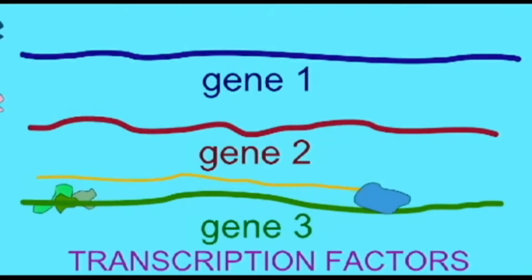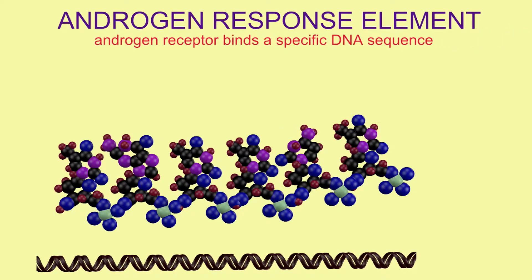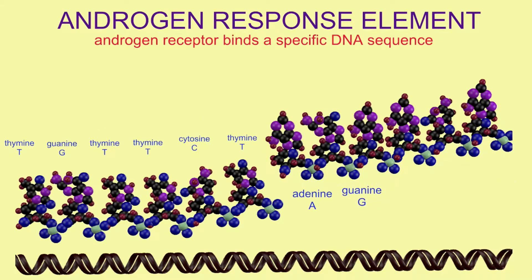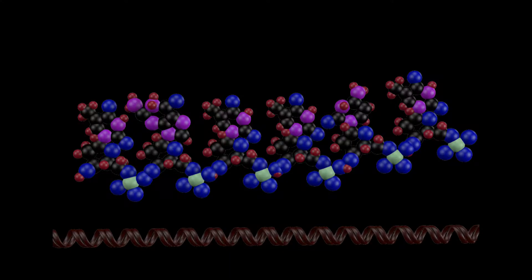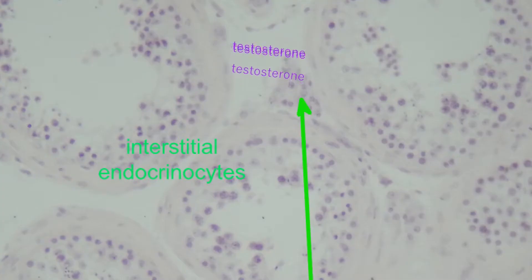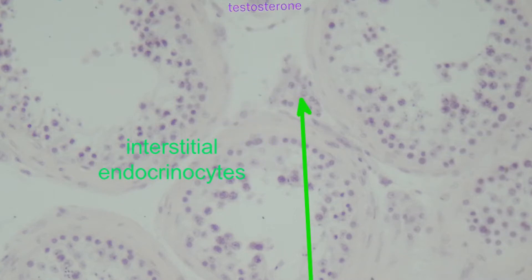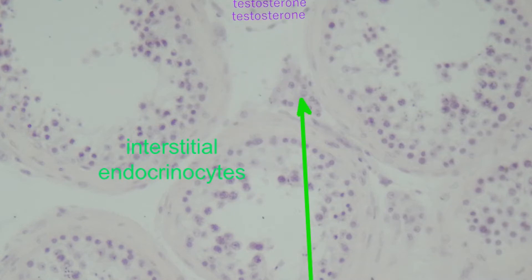This sequence exists as a palindrome: two neighboring sequences which are complementary and could bind to each other, separated by three nucleotides whose identity is not important. Any gene which possesses this androgen response element can bind the androgen receptor transcription factor and have its level of transcription altered by the presence of androgen hormones.